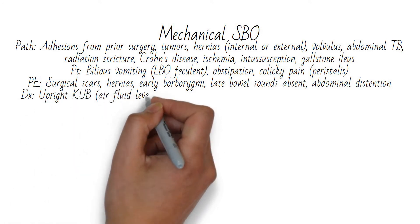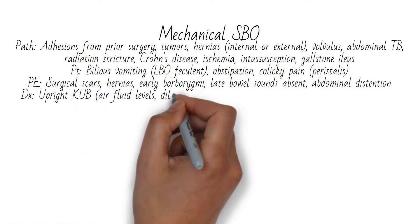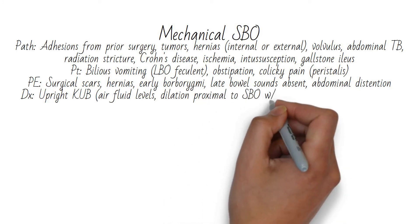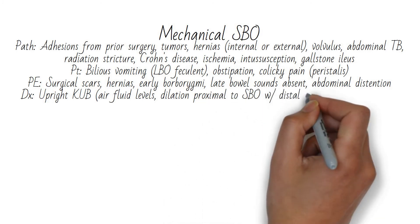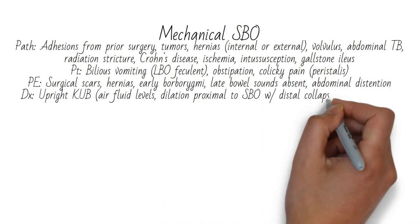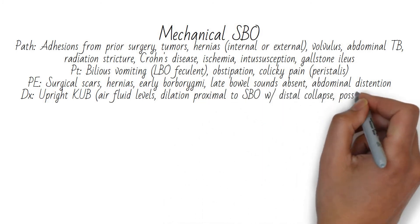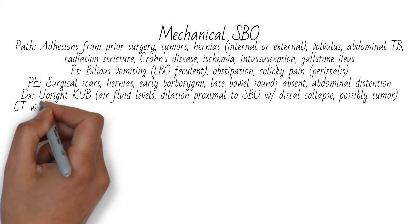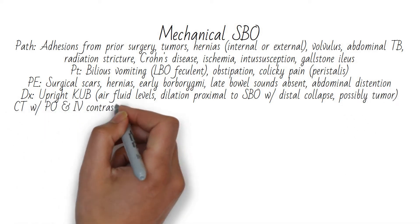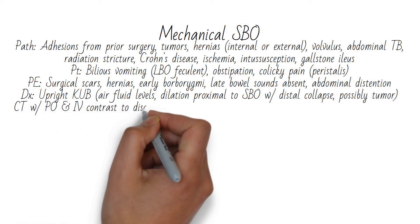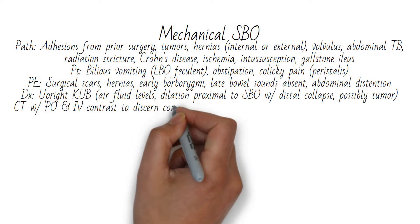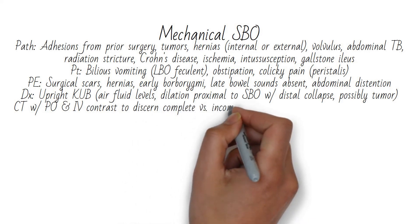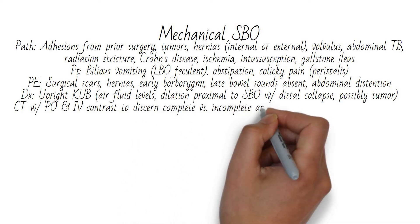There may be visible or palpable hernias. Early on, you may hear borborygmi — high-pitched tinkling bowel sounds — and later bowel sounds will be absent. Begin workup with an upright KUB, where you'll see air-fluid levels, dilated bowel, and collapse of bowel distal to the obstruction.